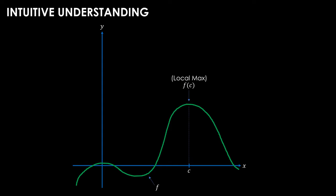Let's get an intuitive understanding for exactly what Fermat's theorem is saying. I'm going to draw a random graph f, and there will be a local maximum at a point called c.